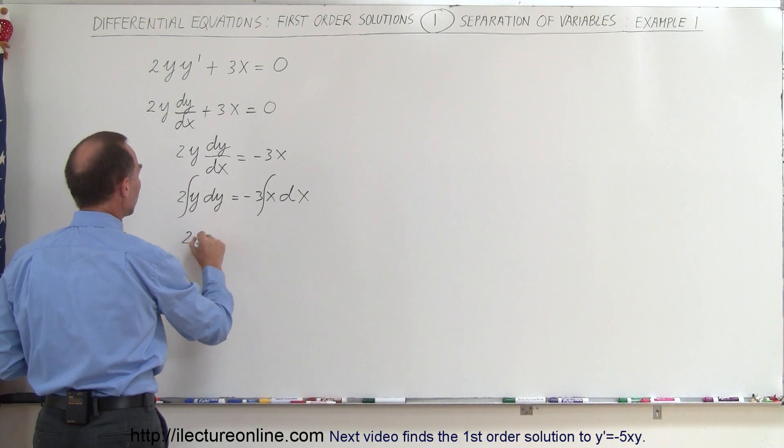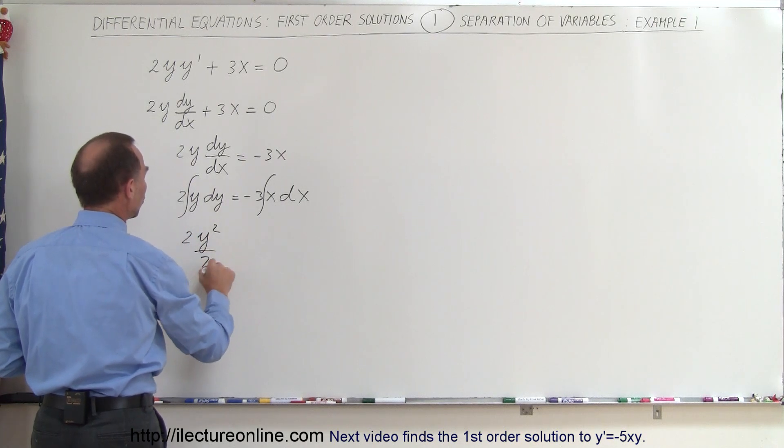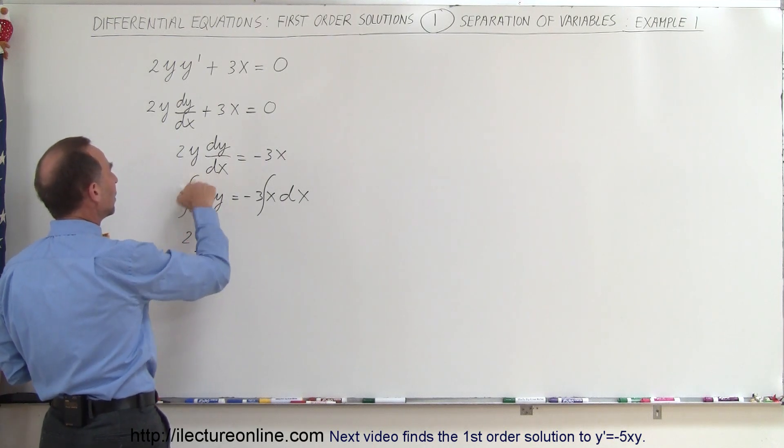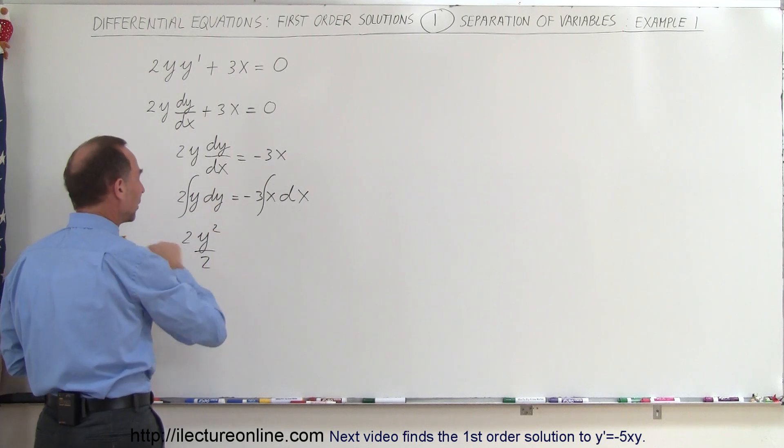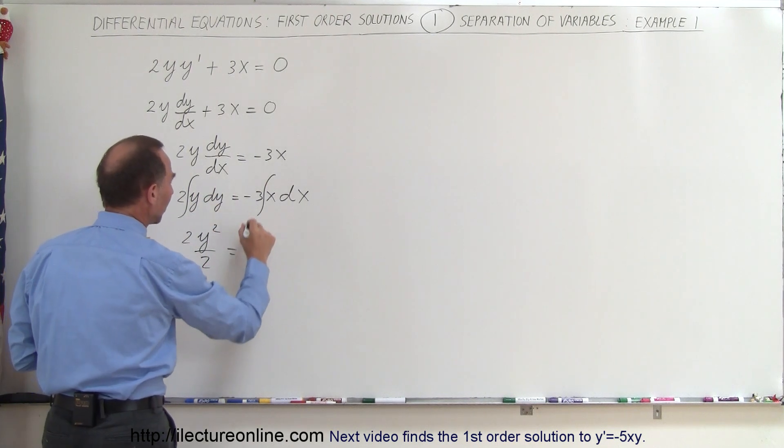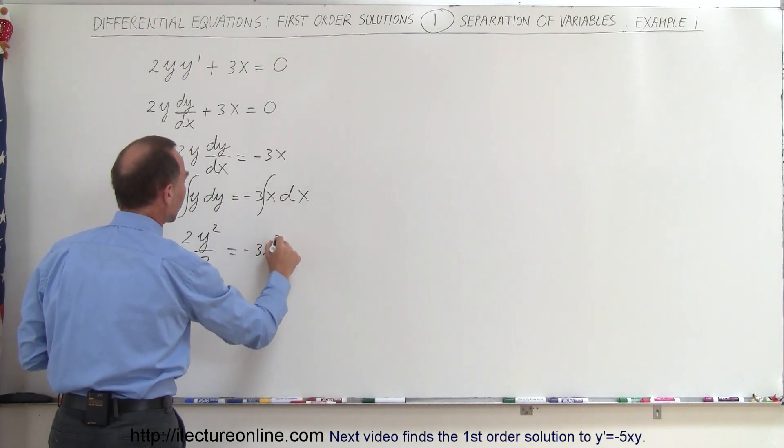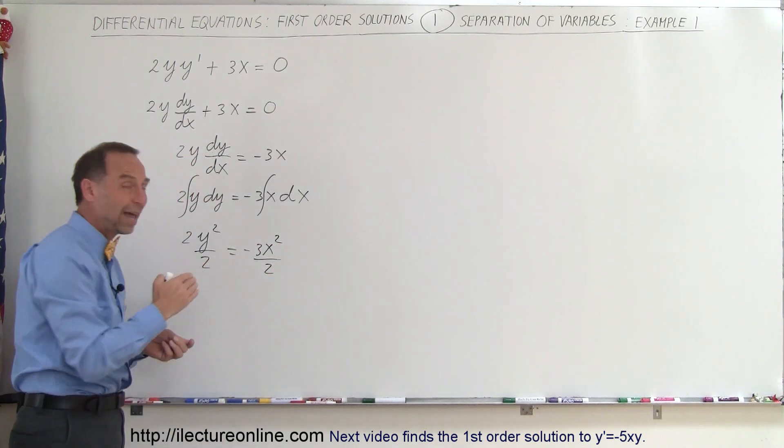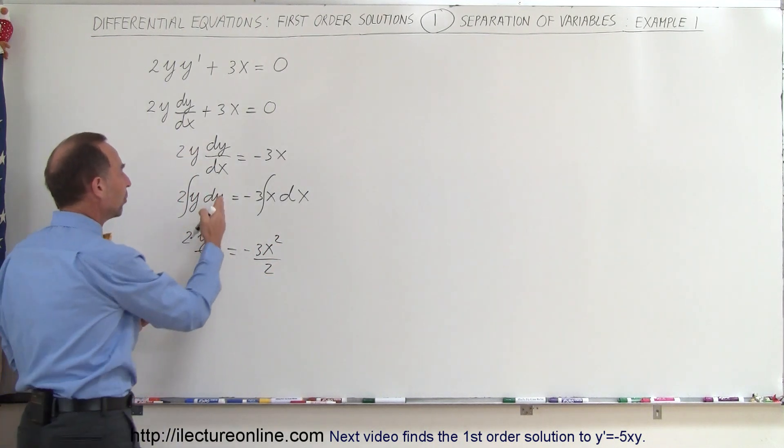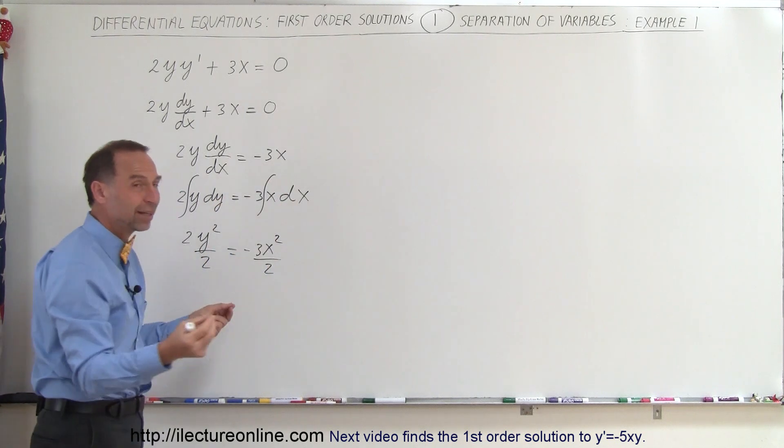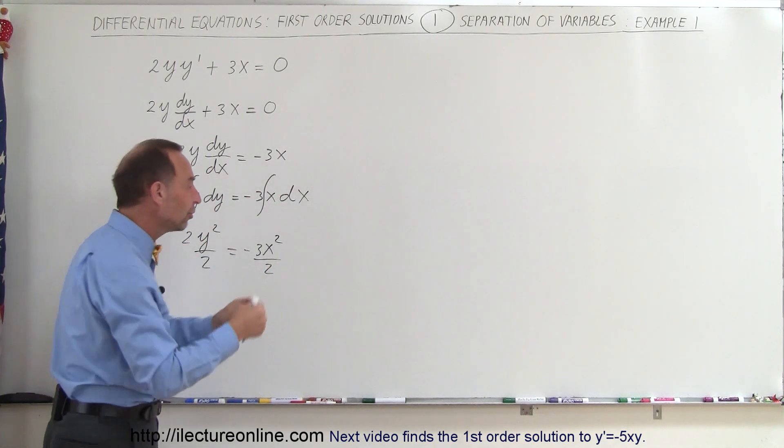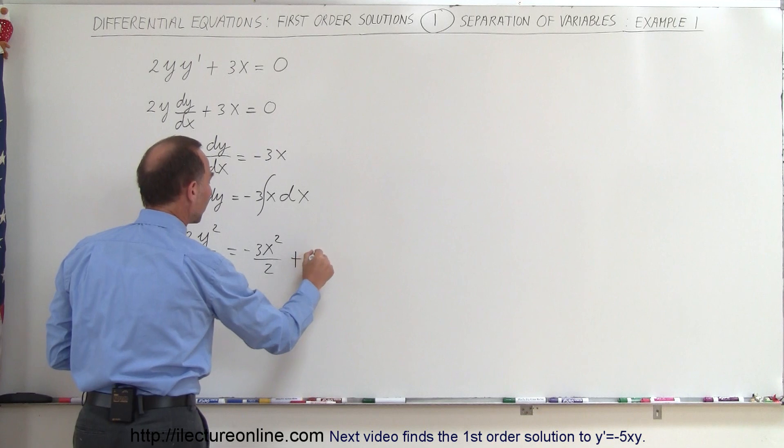So this can now be written as 2y squared over 2, because when we have the integral of y we get y squared divided by the new exponent, equals minus 3x squared over 2. Now of course we have a constant of integration for both the left side and the right side, but I can simply combine those two and move it to the right side and simply write plus c.